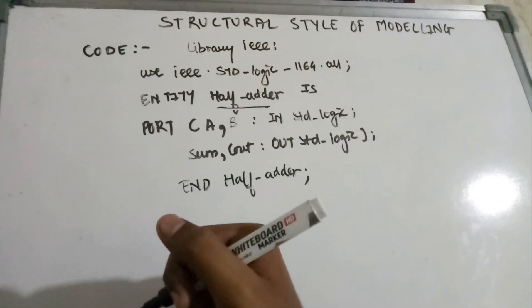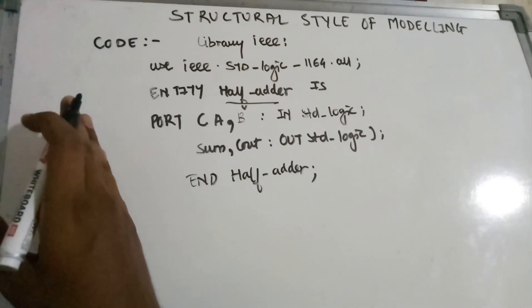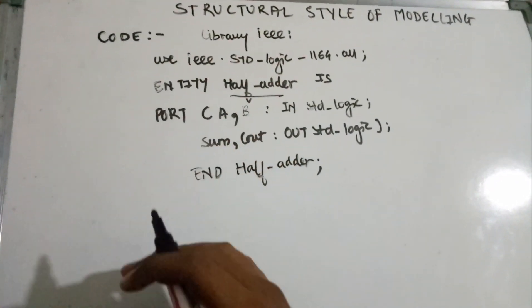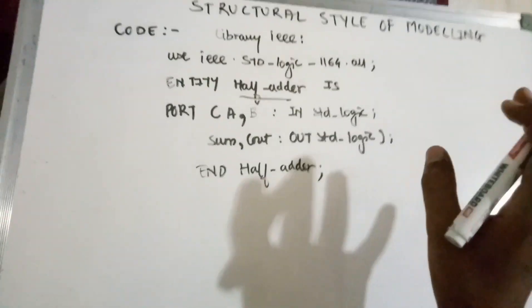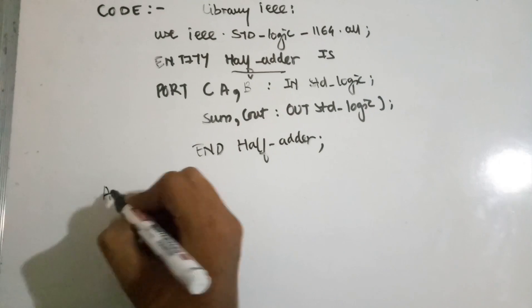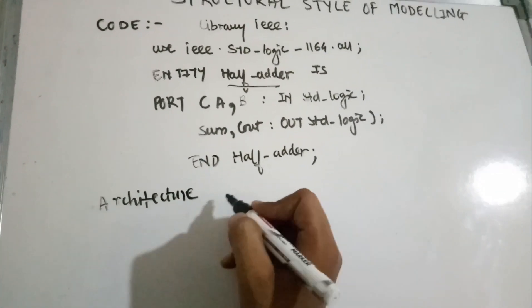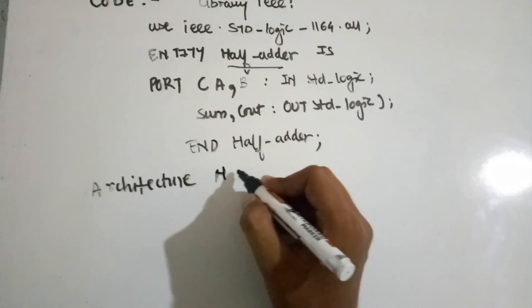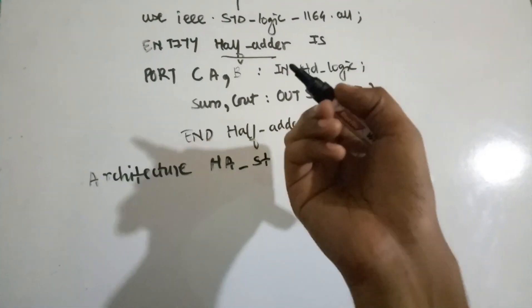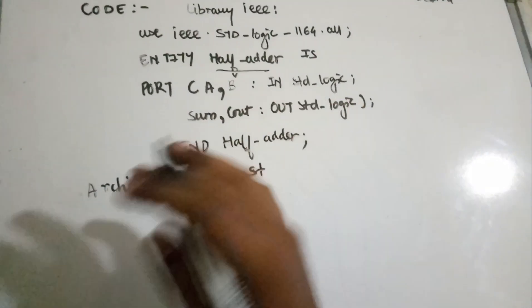Now we have to write the architecture body. For writing an architecture, write: architecture he_structural of half_adder is. We are using structural style of modeling so we write 'structural' — you can give it any name.